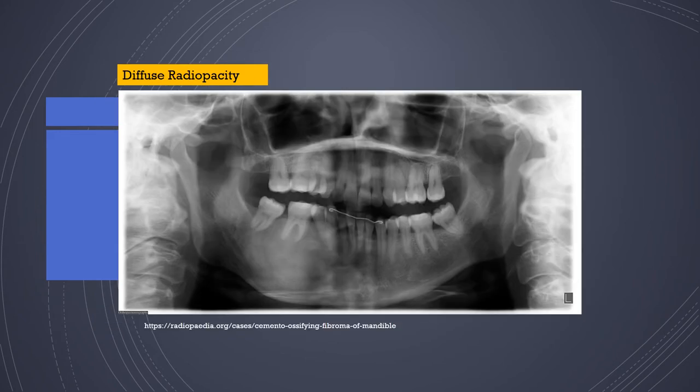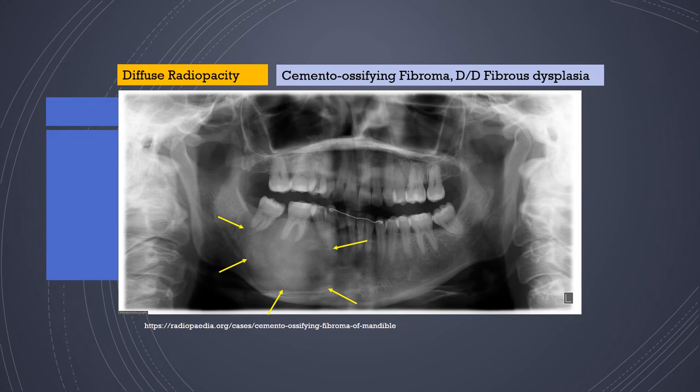Diffuse radio-opacities can also be seen clearly on panoramic radiographs, like the one seen in the right-side fourth quadrant, where there is a large diffuse area whose borders merge with normal bone. There is a change in trabecular pattern, and the entire bone appears opacified and ground-glass-like — consistent with a cemento-ossifying fibroma or fibrous dysplasia of the mandible.